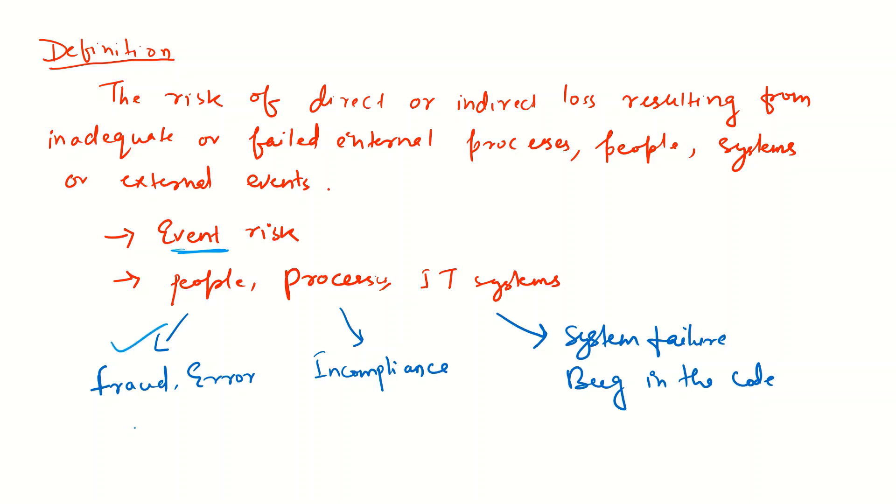Human judgment error is another risk. An analyst could make an error while working in a bank, while doing his activities. So that's human error. That is one kind of operational risk.